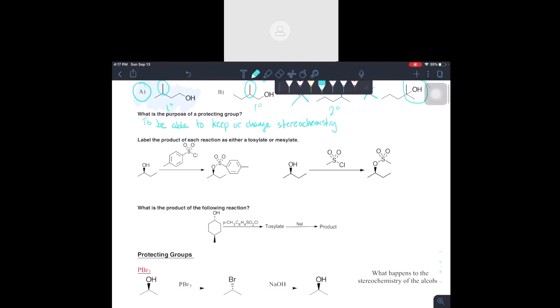So basically you're going to see an alcohol, you're going to place a protecting group on that alcohol, and depending on what that protecting group is you will either invert or not. These are two main ones which is tosylate and mesylate.